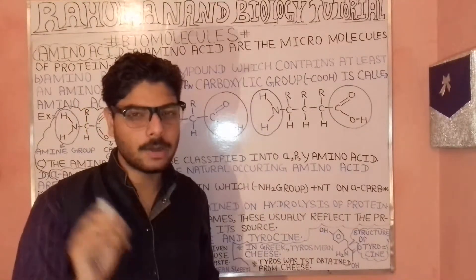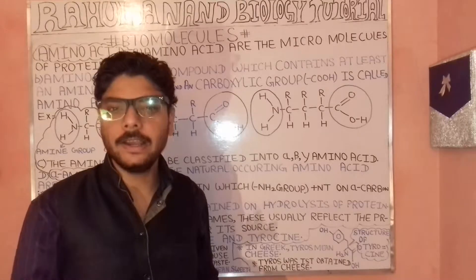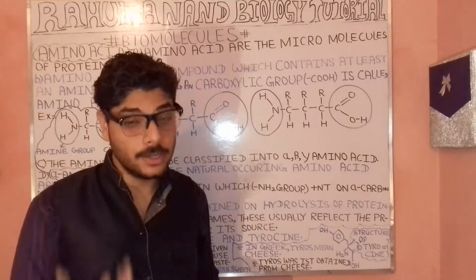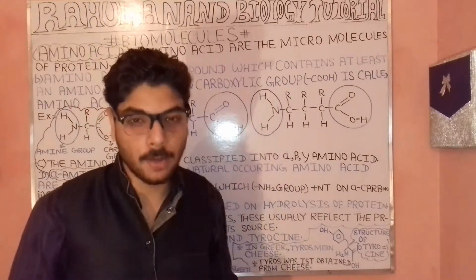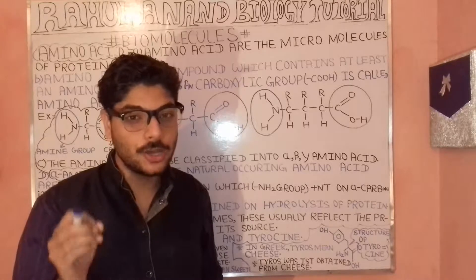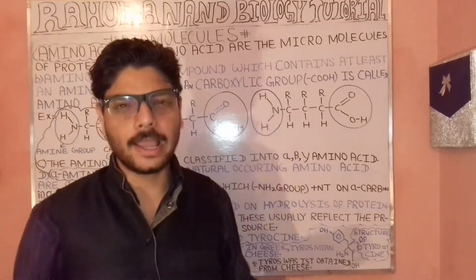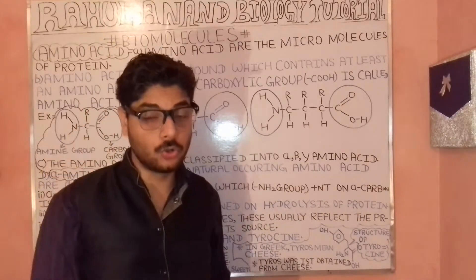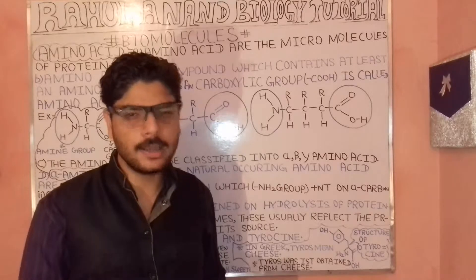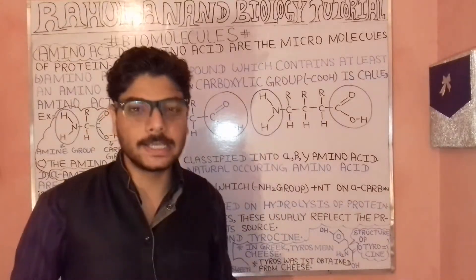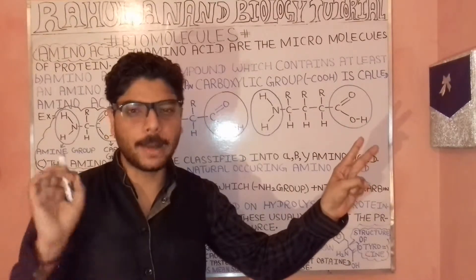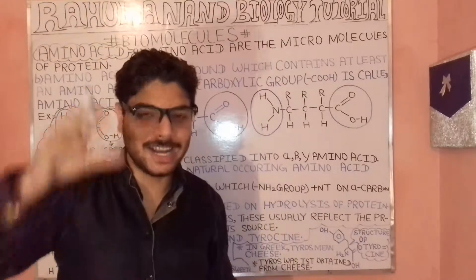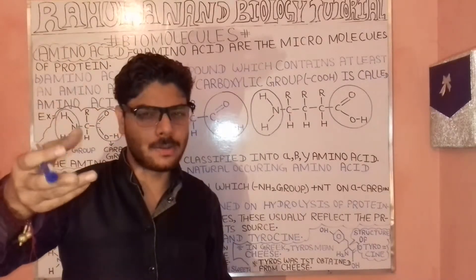Amino acids are the monomers of protein. When we talk about protein, protein is made up of amino acid monomers. Amino acids are compounds which contain at least one NH2 group as well as one carboxylic group — that is, one COOH group, which is the acid group.